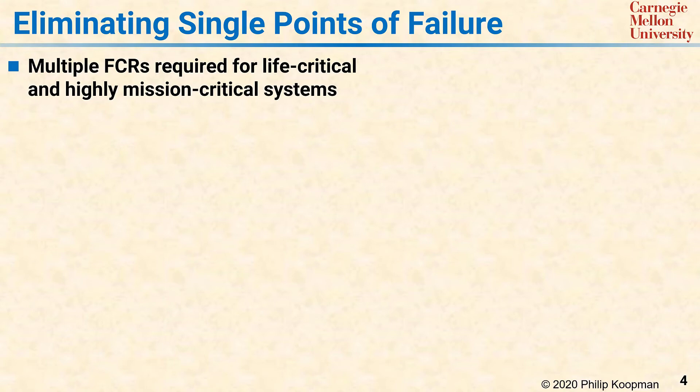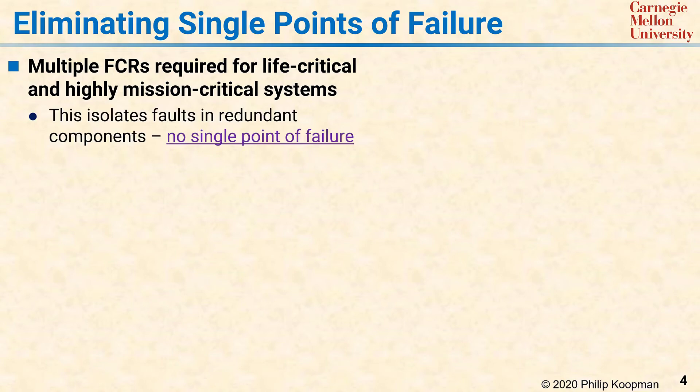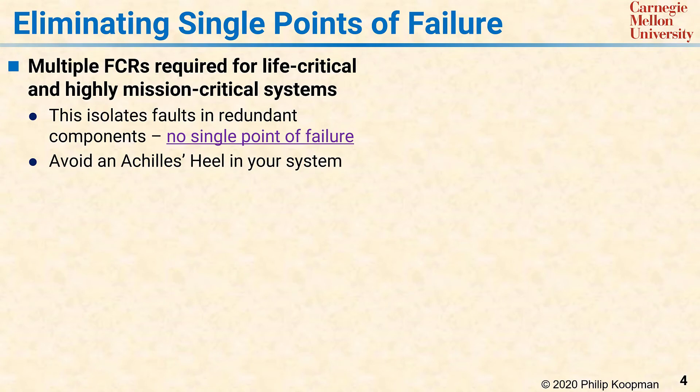If you are building such a system, you need to make sure that not only do you have redundancy to survive such failures, but also that the redundancy has no single points of failure. That's because even if you have lots of redundancy, any single point of failure component is an Achilles heel for your system. To avoid single points of failure, you need multiple computation paths through your system.